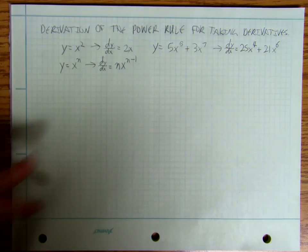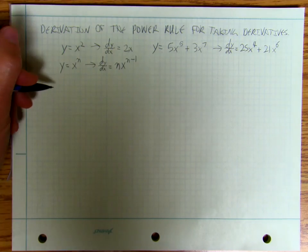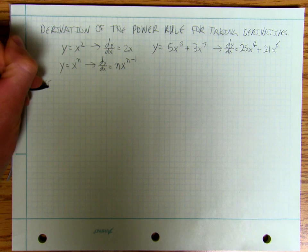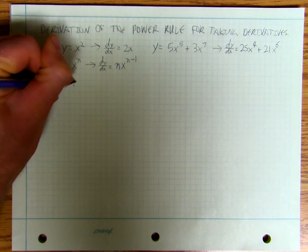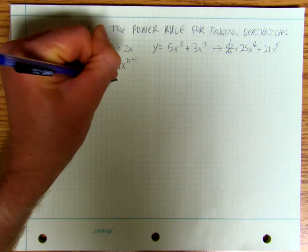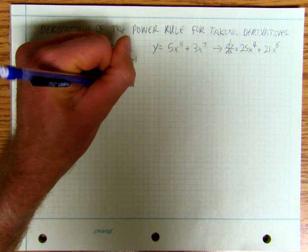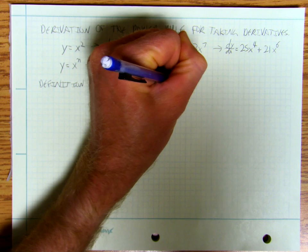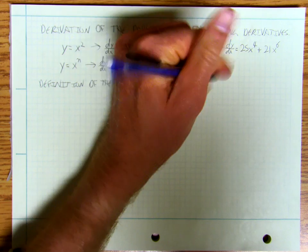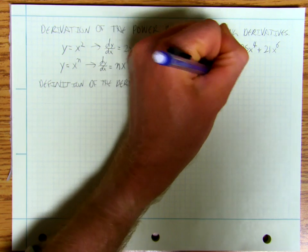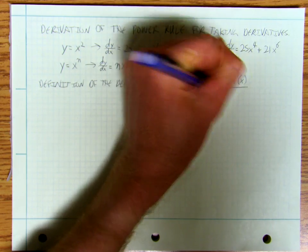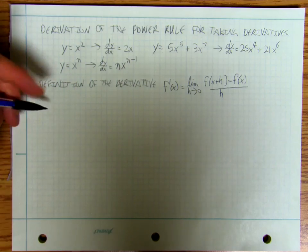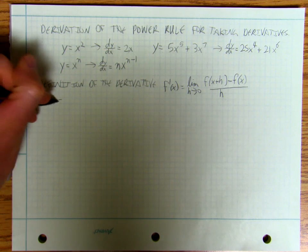Let's do a specific example and then generalize it. The definition of the derivative is that f prime of x is equal to the limit as h approaches 0 of f of x plus h minus f of x, all over h. We did some of those in earlier videos, so I'm going to recap one of those and then extend it. Let's suppose that our f of x is equal to x squared.